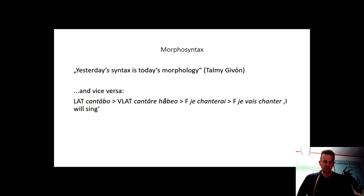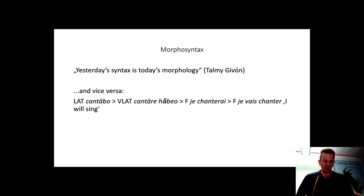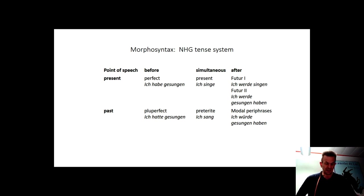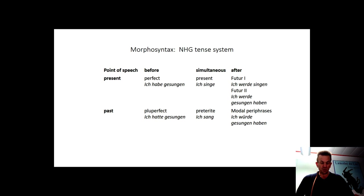What does that mean in concrete terms for the development of today's tense system, namely the present, past, perfect, pluperfect, and future I and II tenses? The forms of the synthetic German tenses, i.e. the present and past tenses, are inherited. What about the analytically formed tenses, which are of course much more interesting in the context of the history of German morphosyntax?